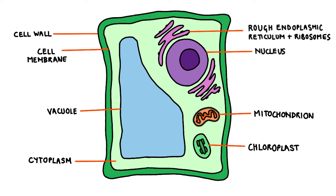The plant cell is found in living organisms like trees, grass, and flowers. The cell is surrounded by a cell wall which maintains the shape of the cell, gives it strength, and prevents the cell from bursting.